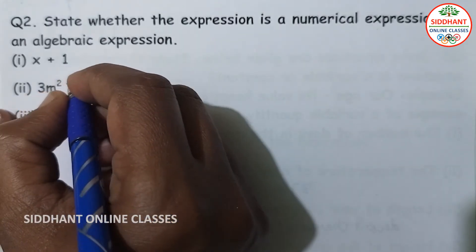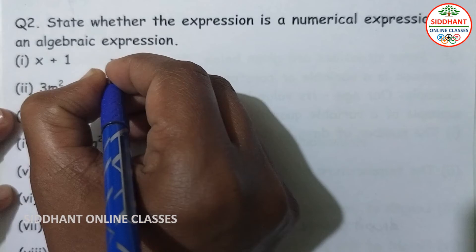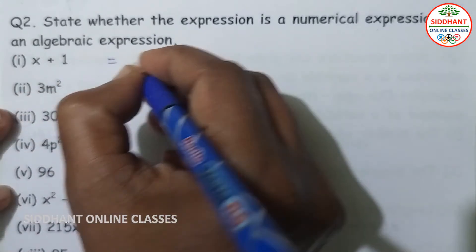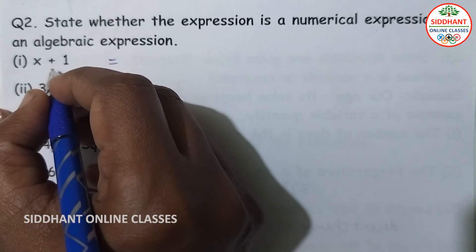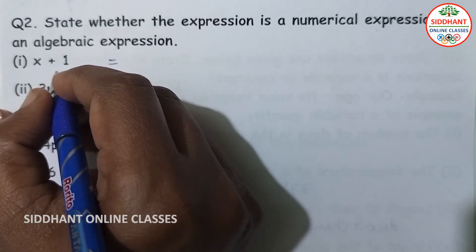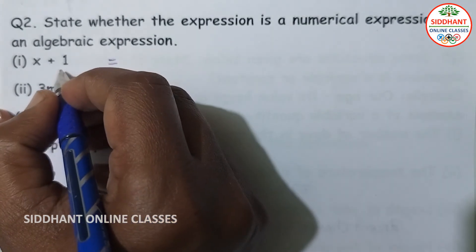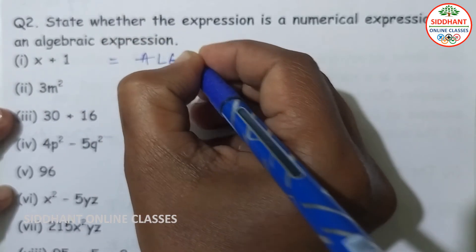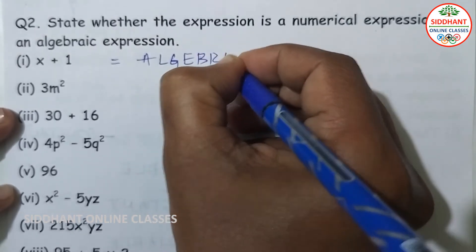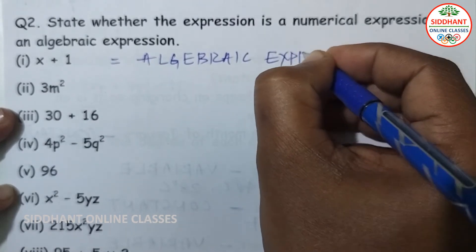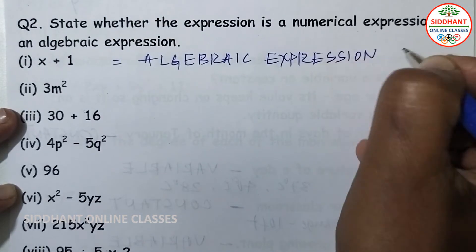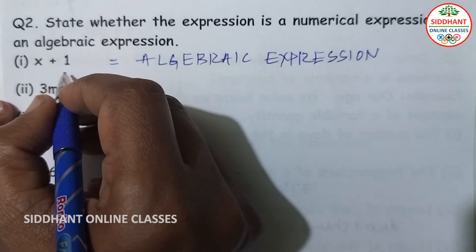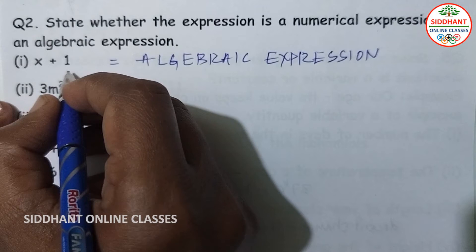Question number 2: state whether the expression is a numerical expression or an algebraic expression. First one — x plus 1 — it has a variable x, so it is an algebraic expression, containing one variable and one constant.